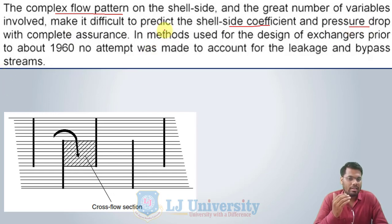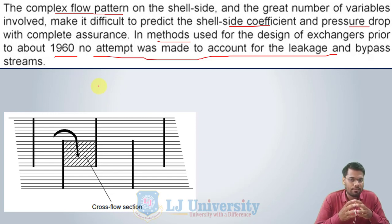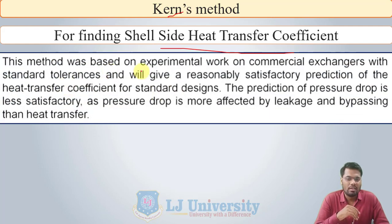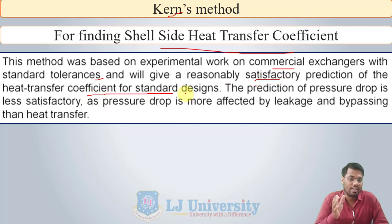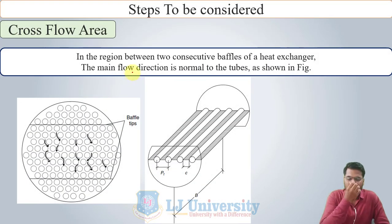In Kern's method — the first method — used for the design of exchangers prior to about 1960, no attempt was made to account for the leakage and bypass streams. So in Kern's method, there is no consideration of leakages and bypasses. This method was based on experimental work on commercial exchangers with standard tolerances and will give reasonably satisfactory prediction of the heat transfer coefficient for a standard design. The prediction of pressure drop is less satisfactory, as pressure drop is more affected by leakages and bypassing than heat transfer.